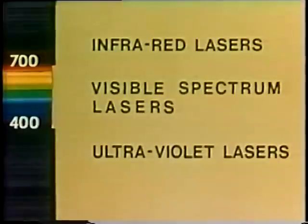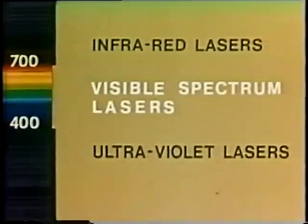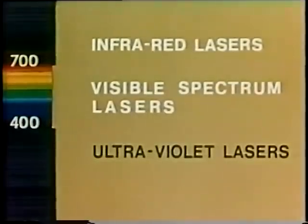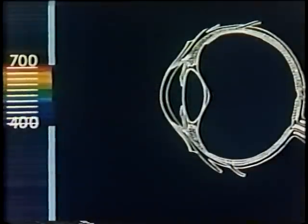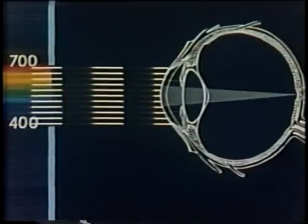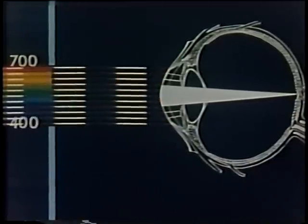Laser radiation falls within a very narrow portion of the electromagnetic spectrum, and various wavelengths cause damage to different parts of the eye. In the visible region, most of the radiation is focused by the lens onto the retina — the usual place of injury. The focusing effect increases the intensity of the radiation on the retina.